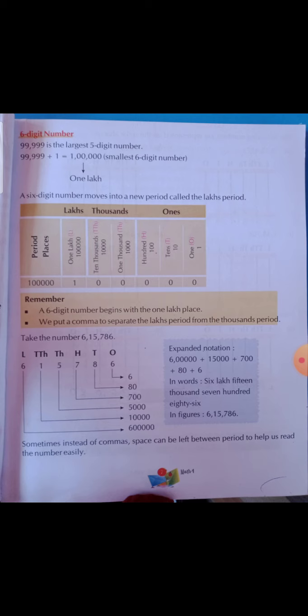Now see the expanded notation. In expanded form we write: 6 lakhs plus 15,000 plus 700 plus 80 plus 6. When we add all of these together we get 6,15,786.